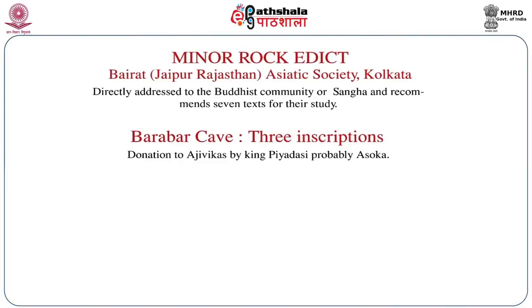Among the cave inscriptions, there are three cave inscriptions by Ashoka in the Barabar caves, Jehanabad district, Bihar. These are beautifully polished caves donated by Ashoka to the Ajivika monks. There are four caves in the Barabar complex, but only three have inscriptions; the Lomas Rishi cave does not have any donative record. Similar caves are also found on the Nagarjuni hill, but those inscriptions are by Dasharatha, the grandson of Ashoka, who also donated to the Ajivika monks. Interestingly, in the Barabar cave inscriptions, the word 'Ajivika' has been erased, possibly by someone not in favor of the Ajivikas.